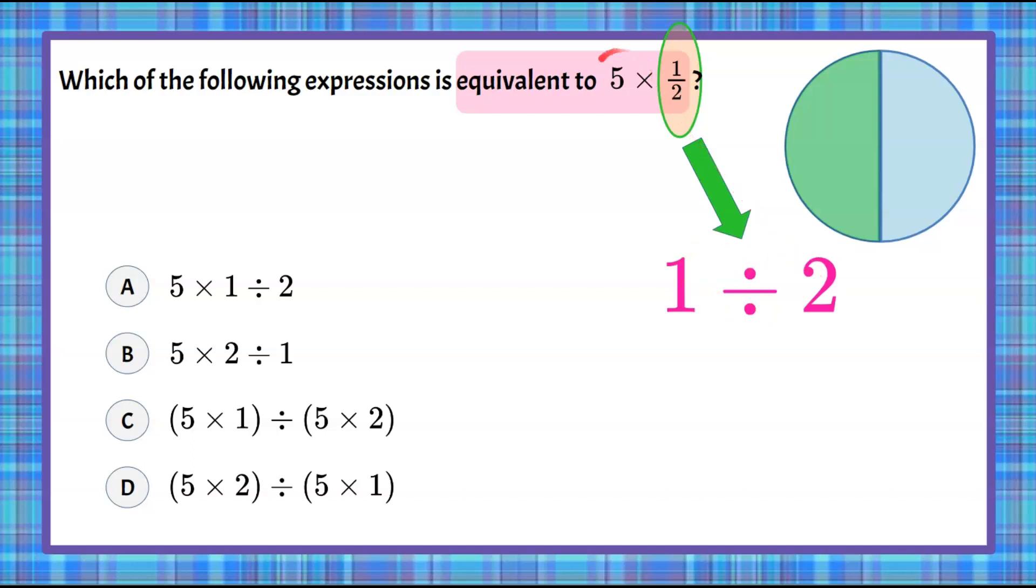Now we want to bring down the first part of our expression, which was five multiplied by that value one-half, or one divided by two. So five multiplied by one divided by two is equivalent to five times one-half. And when we look at our answer choices, we see that that is answer choice A.